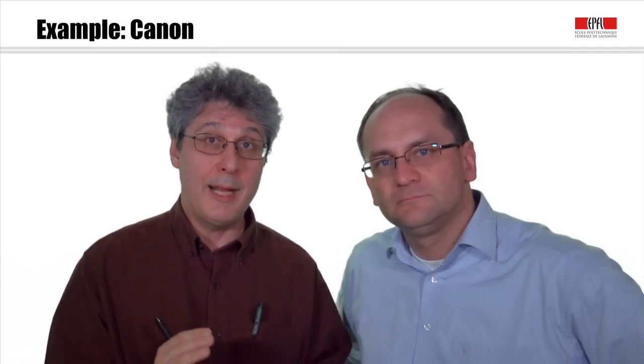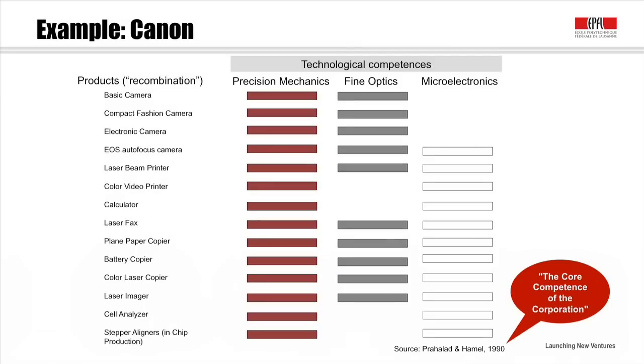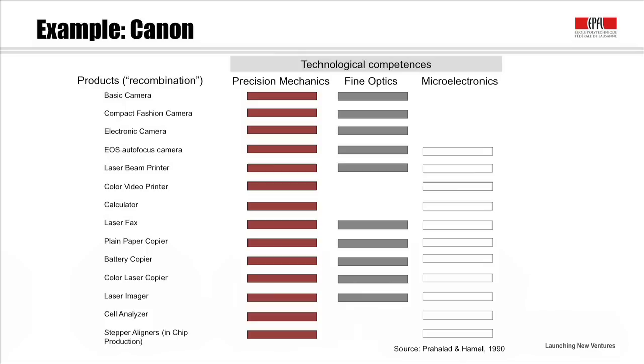Let's look at a concrete example: Canon, a company that makes different kinds of camera devices. This is the classic story from the Prahalad and Hamel article from years ago, which shows that they have expertise in certain areas: precision mechanics, fine optics, and microelectronics. For a basic camera, you just need precision mechanics and fine optics — precision mechanics covers everything they're doing — and certain other combinations enable them to make specific products.